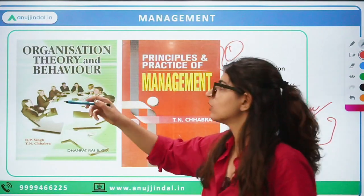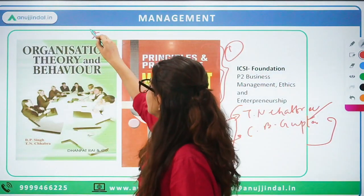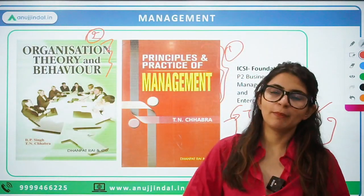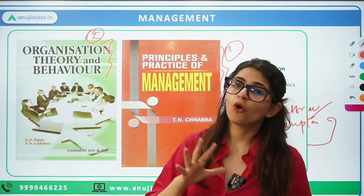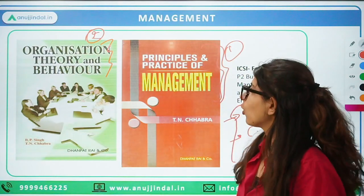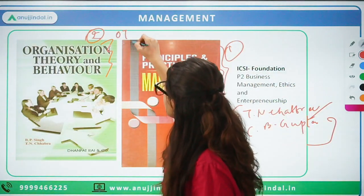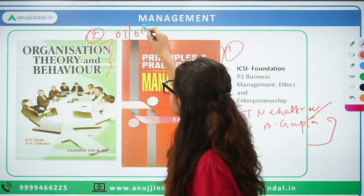The second book you should buy if preparing on your own is an OB book — Organizational Theory and Behavior (OTOB). Cover both of these books.